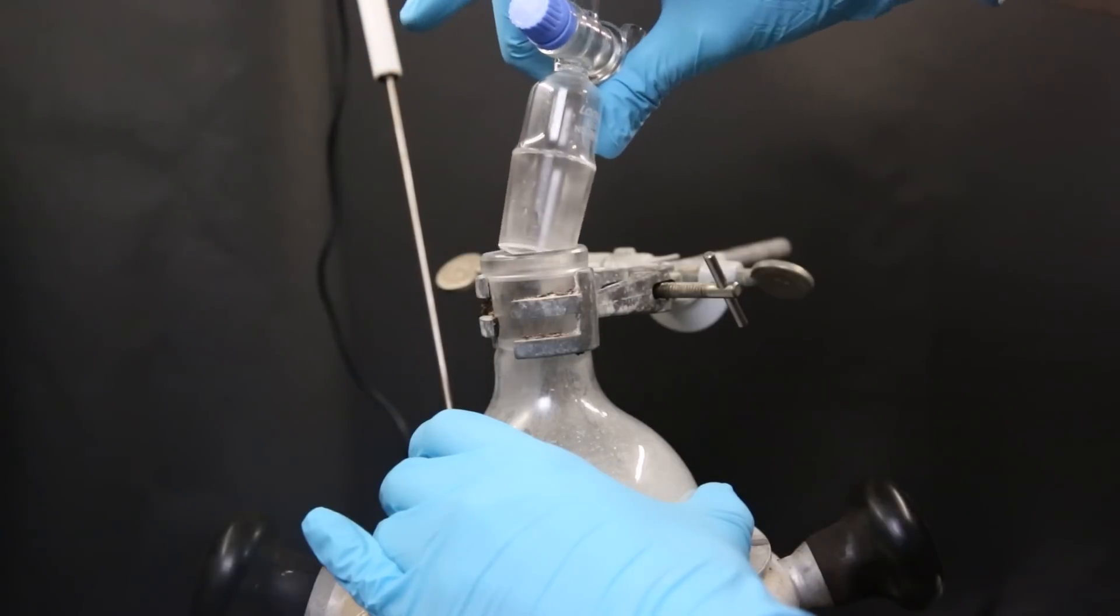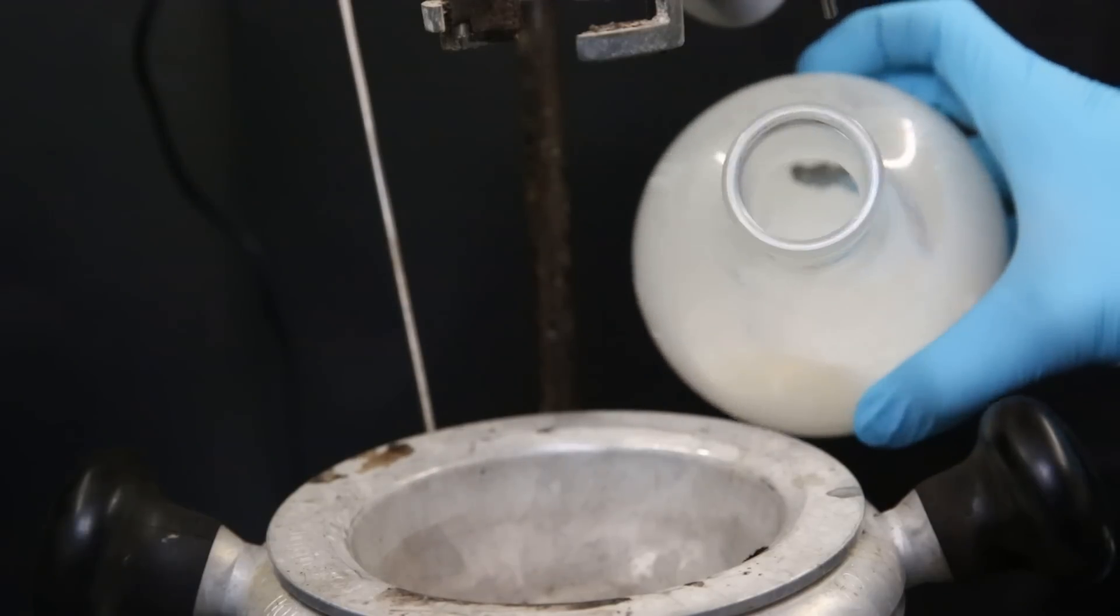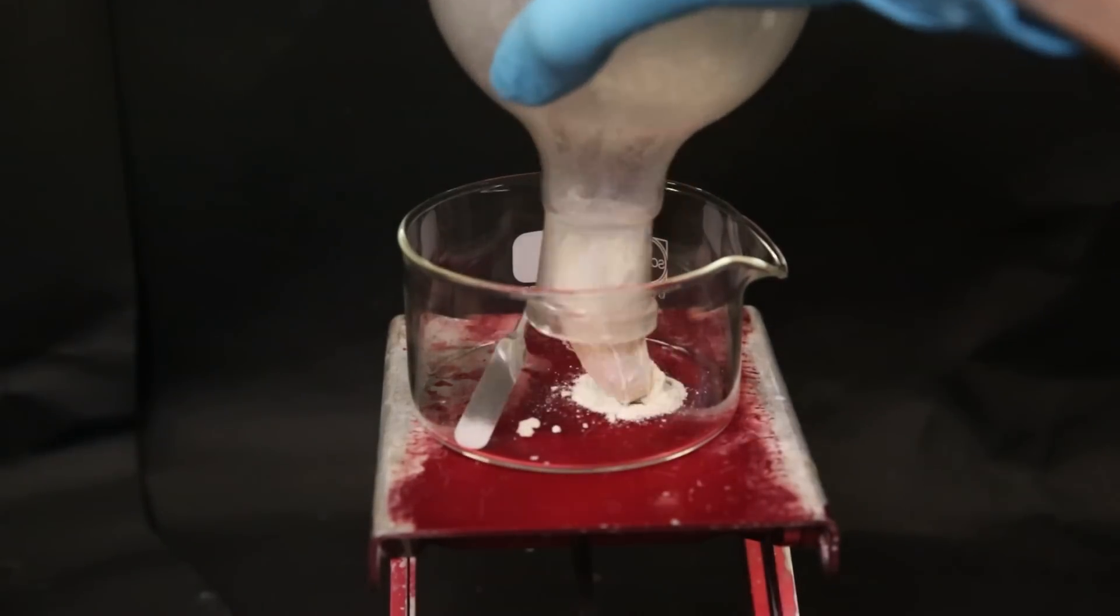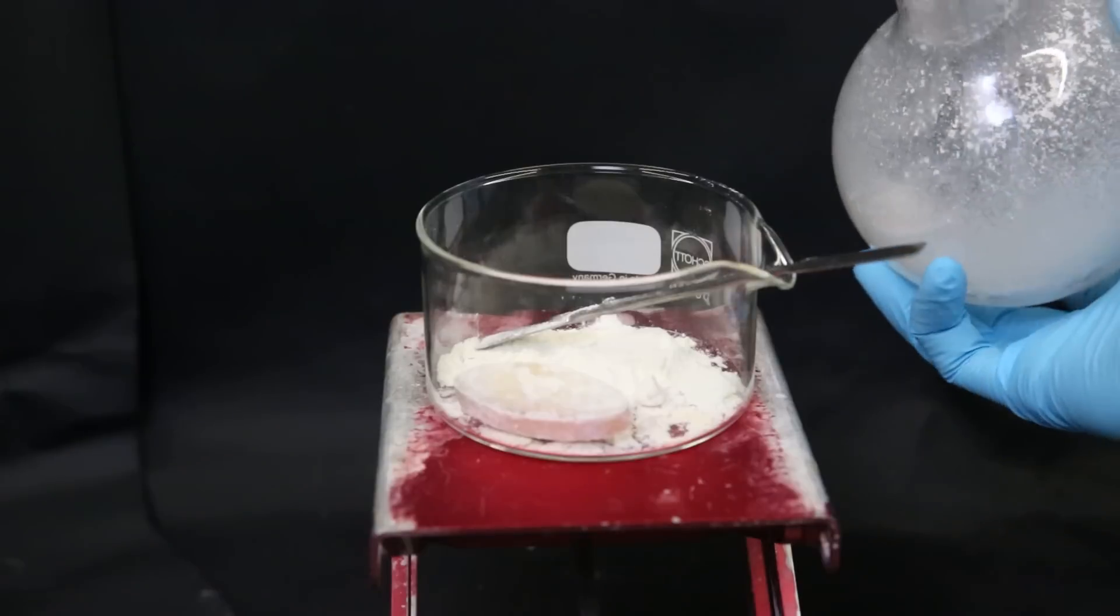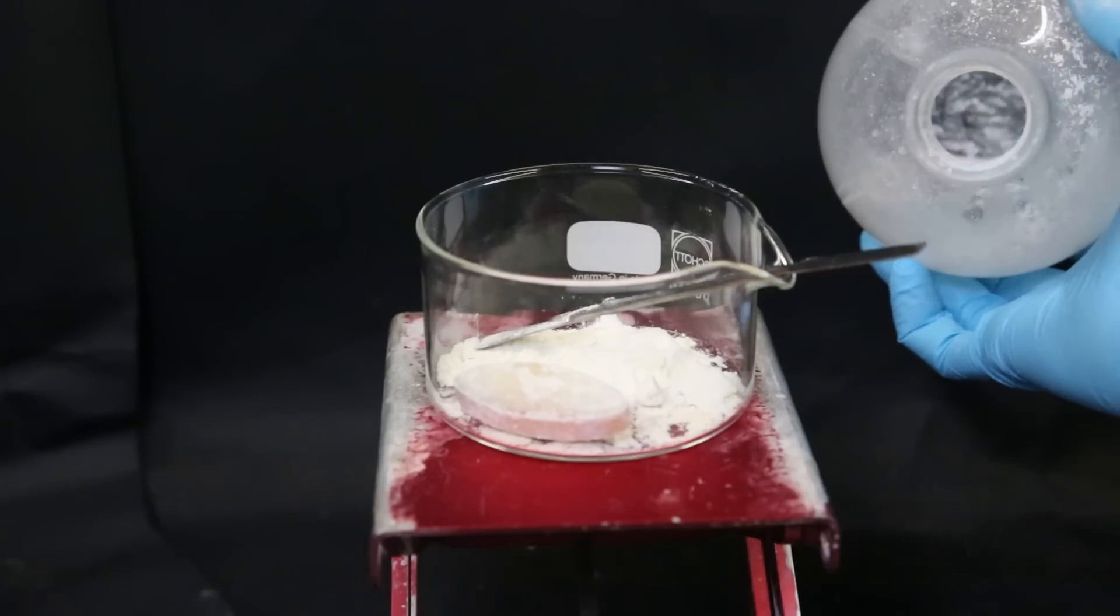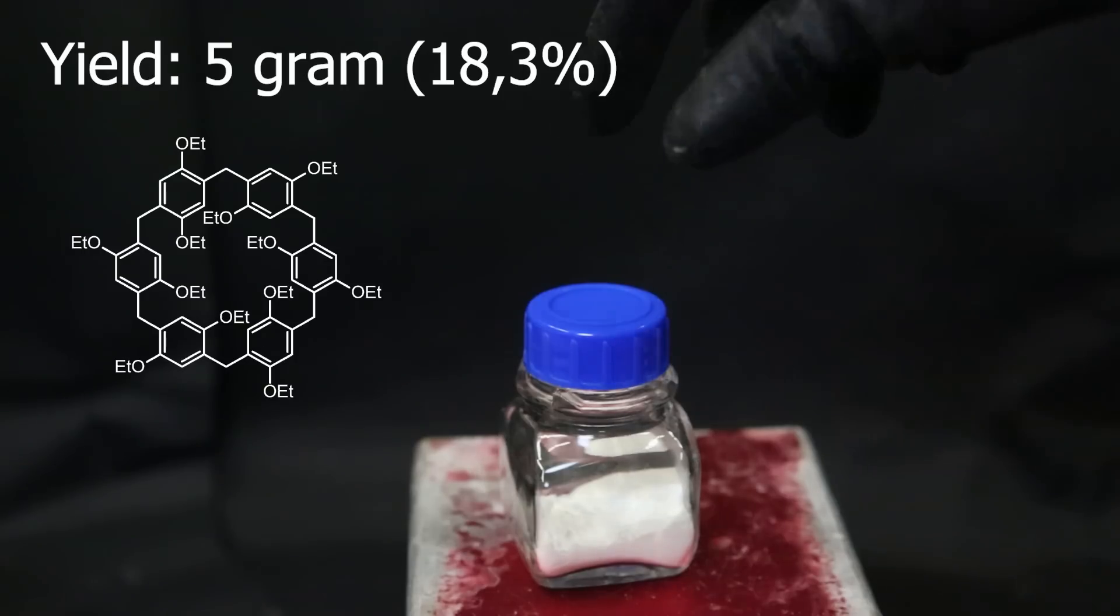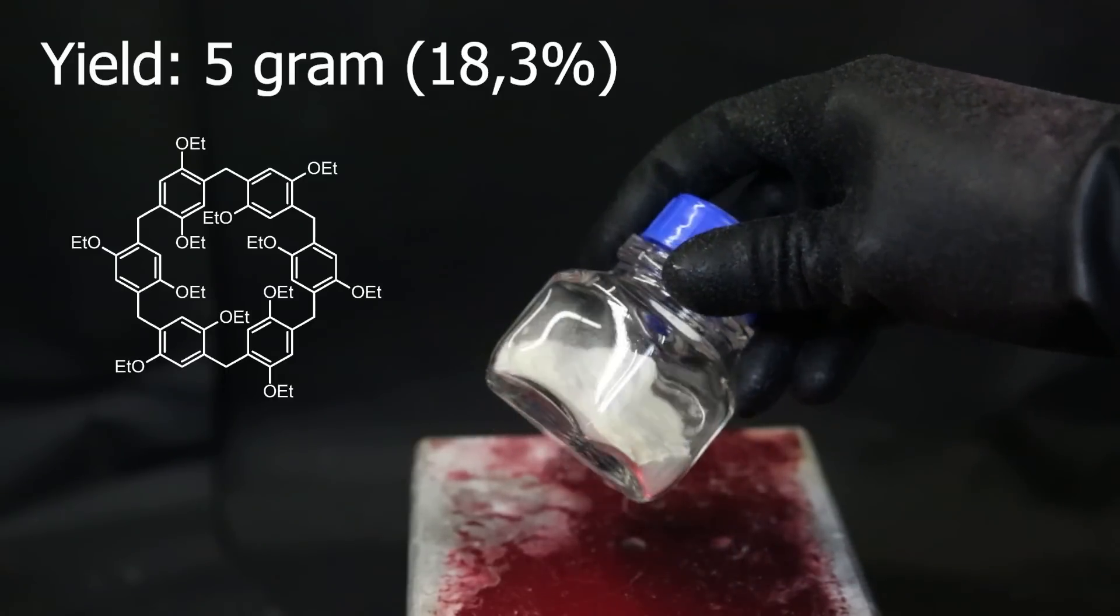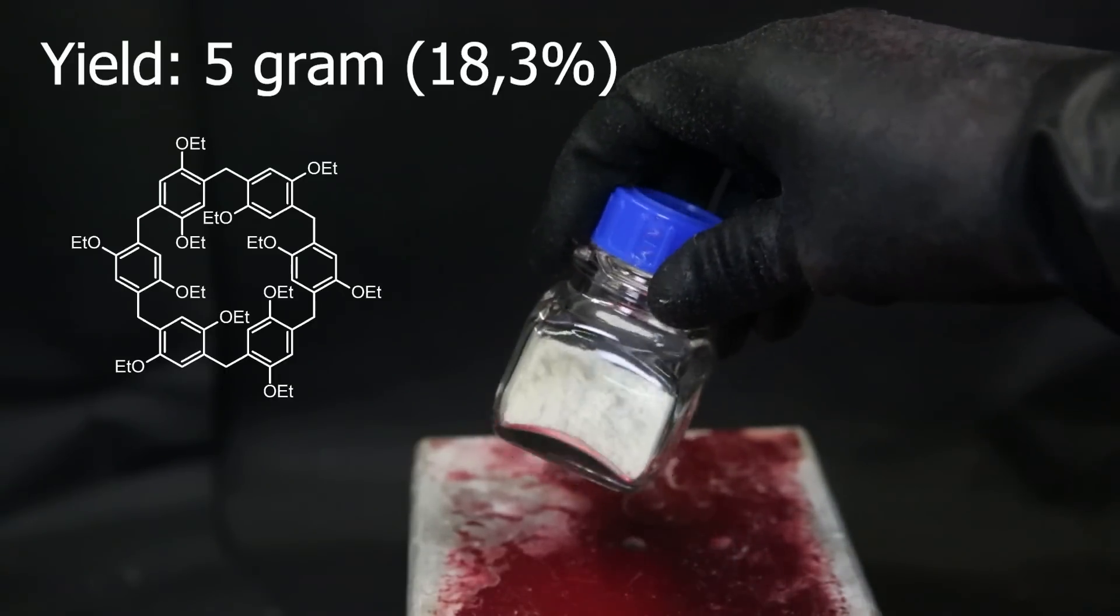I take off the adapter, and when we peek inside, we see a bunch of white powder. So I poured it all into a dish and scraped off as much as I could. In the end, I have 5 grams of product, which corresponds to a yield of 18.3%, but it can still be further purified.